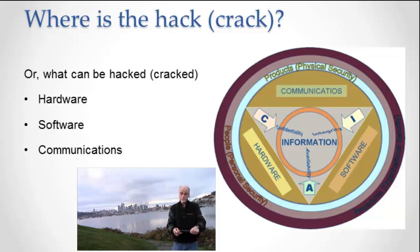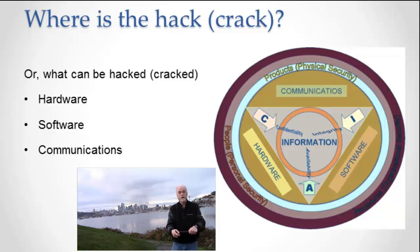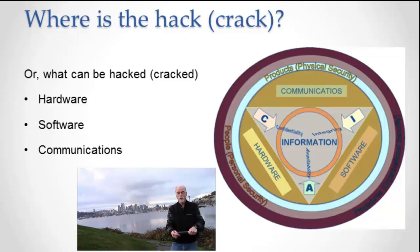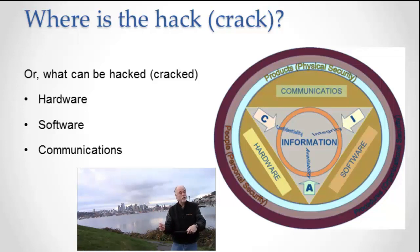And then finally, communications. For example, when you're in a coffee shop using an unsecured Wi-Fi connection and someone elsewhere in the coffee shop is monitoring that communication — monitoring the interchange between you and the Wi-Fi router — that's hacking the communication. They're tapping into your communication, and that could happen anywhere in any network. On network computers throughout the world, lots of internet traffic goes through. You can sniff that traffic for packets of information that are interesting to you, and in that way compromise the security, availability, or integrity of the information.